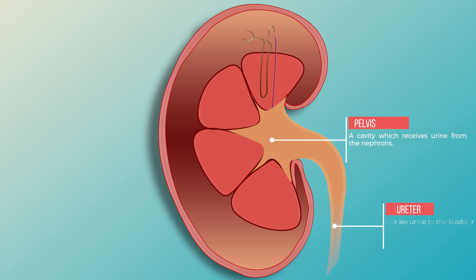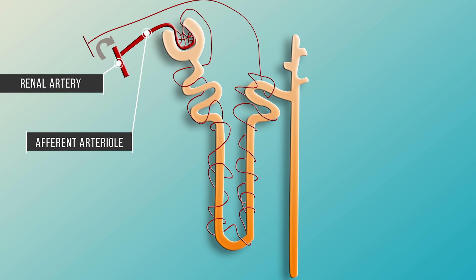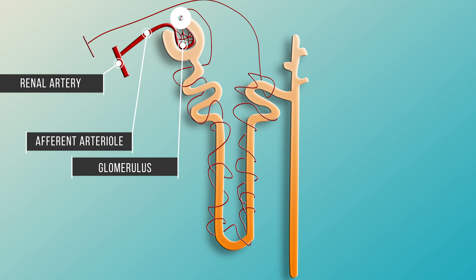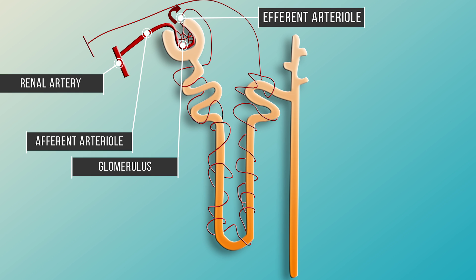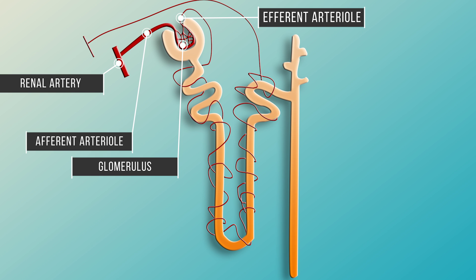Blood vessels are closely associated with the nephrons. Each renal capsule is supplied with blood by a branch of the renal artery called the afferent arteriole. The blood is at very high pressure since the renal arteries are short and not far from the heart. This splits into a knot of capillaries in the cup of the renal capsule called the glomerulus. The capillaries of the glomerulus rejoin to form an efferent arteriole. Hydrostatic blood pressure in the glomerulus is raised further because the diameter of the efferent arteriole is much smaller than that of the afferent arteriole. The efferent arteriole then forms a network of capillaries running closely alongside the rest of the nephron before feeding into a branch of the renal vein.